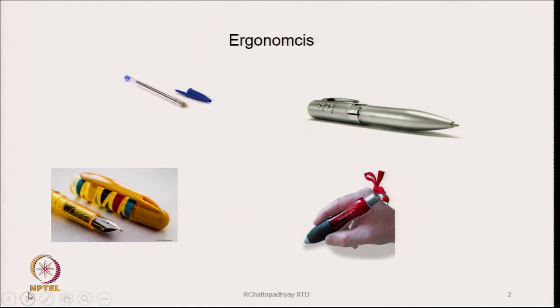If you look at this slide, what do you see here? We see a few pens. Now if you see the pen as a writing instrument, all the pens can write, but what are the differences between them? The differences are color, and the other one is size — some pens are quite fat or thick, and some are quite thin. The color differences are because of the beauty or aesthetic aspects.